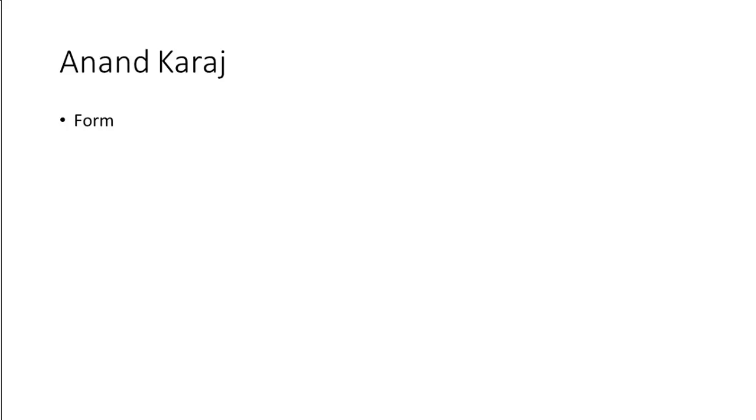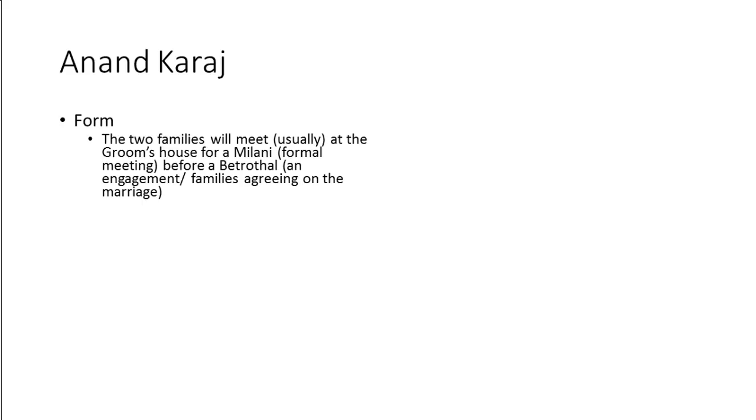The way in which the Anand Karaj ceremony is conducted: it starts off with two families meeting before the actual wedding ceremony, most likely at the groom's house, for something called a Malani, which is a formal meeting, and then there will be a betrothal, which is the agreement on the marriage.